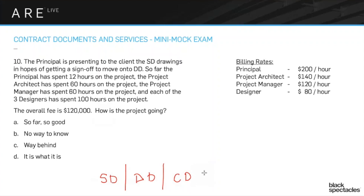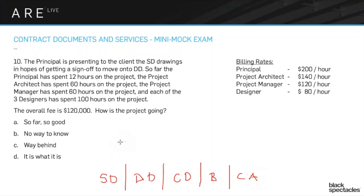For the exam, think of CDs as contract documents, not just construction drawings. After CDs there's bidding, and then CA — construction administration. The term 'supervision' should never be used; use 'observation' instead, because saying 'supervision' means you've taken on all the contractor's liability. Those are the five stages of a typical contract.